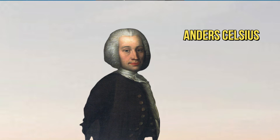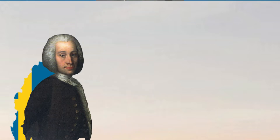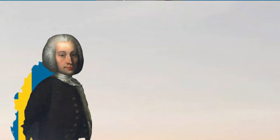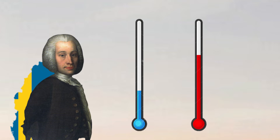Anders Celsius was a Swedish astronomer credited with the invention of the centigrade scale in 1742. Celsius chose the melting point of ice and the boiling point of water as his two reference temperatures to provide a simple and consistent method of thermometer calibration. Celsius divided the difference in temperature between the freezing and boiling points of water into 100 degrees, thus the name centi meaning 100 and grade meaning degrees.